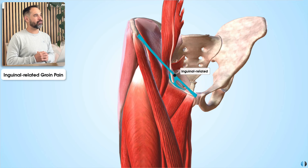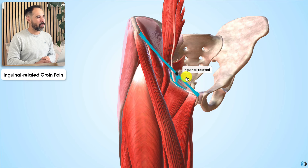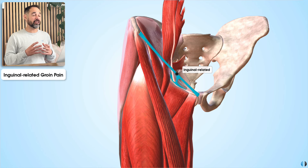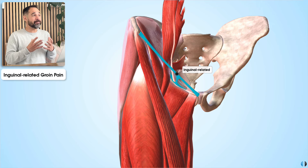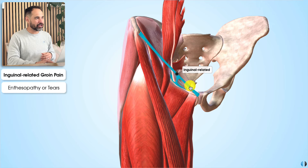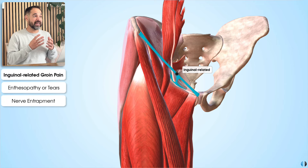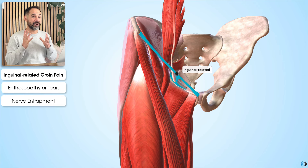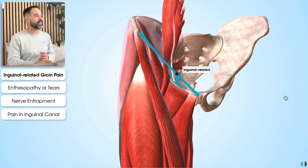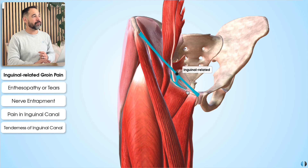Next we have inguinal-related groin pain — pain around the distal inguinal ligament and the inguinal canal, just above the pubic symphysis. The experts were keen to find terminology for ruling out an inguinal hernia, and also how to characterize other symptoms in the inguinal region, such as an enthesopathy of the distal inguinal ligament, tears in the aponeurosis of the external oblique, or perhaps an ilio-inguinal nerve adhesion or entrapment. Key classification terms include pain in and around the inguinal canal region and tenderness of the inguinal canal, just superior to the pubic ramus.